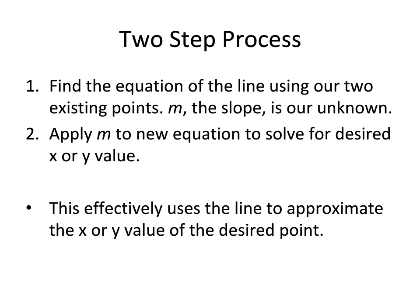Once again, to reiterate in case what I said earlier was hard to understand, it's a two-step process. We want to find the equation of the line using our two existing points, the blue points in our previous slide. m, the slope, is our unknown in this first step. Now that we have m, we go to step two. We reuse the same equation and solve for desired x or y value. So we can interpolate knowing either x or knowing y, and find the other one, the one that we don't know.